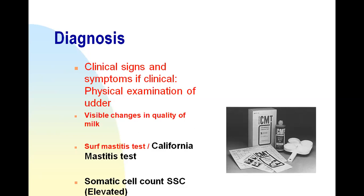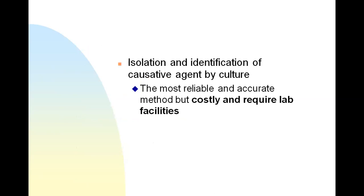If a bulk milk sample has a high somatic cell count, you can say the milk is from a herd with a high number of infected animals. Isolation and identification of the causative agent by culture is the gold standard, but it is costly and requires lab facilities. Therefore, in the field, the Surf Mastitis Test or California Mastitis Test is most commonly used to detect mastitis.